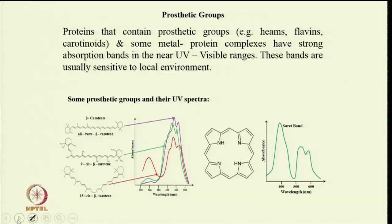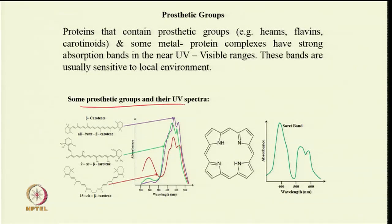UV visible spectroscopy can also be used to identify different proteins, and it is quite useful for proteins that contain prosthetic groups such as hemes, flavins, or carotenoids. Some metal-protein complexes have very strong absorption bands in the near UV visible range, and these bands are usually sensitive to the local environment, so we can study changes happening in proteins. Here are some prosthetic groups and their UV spectra.